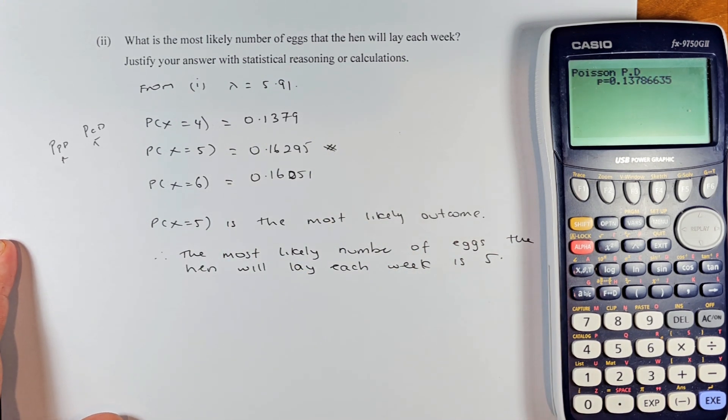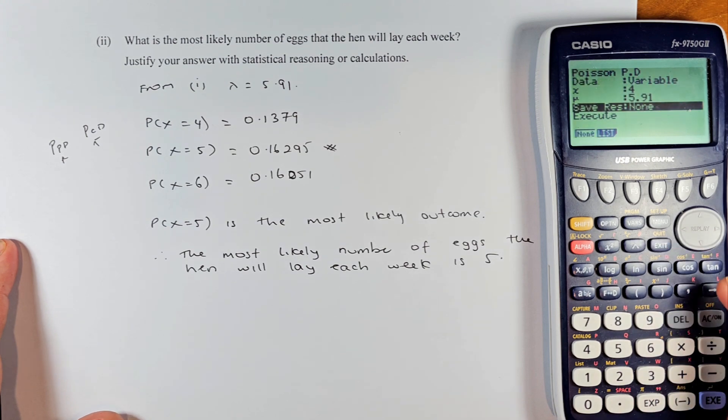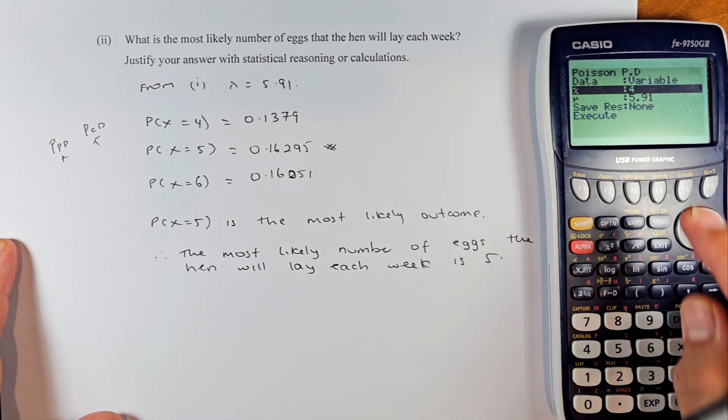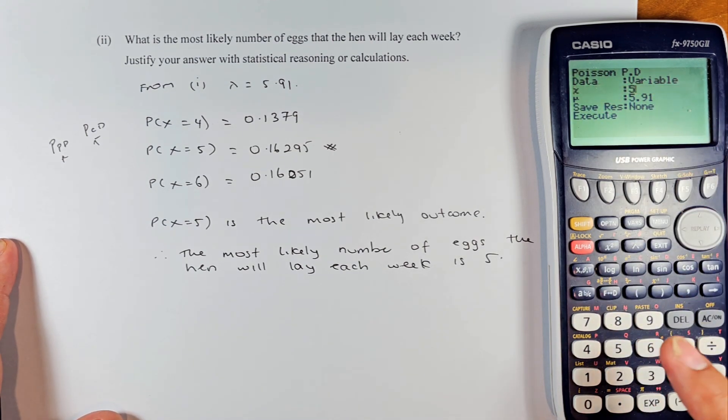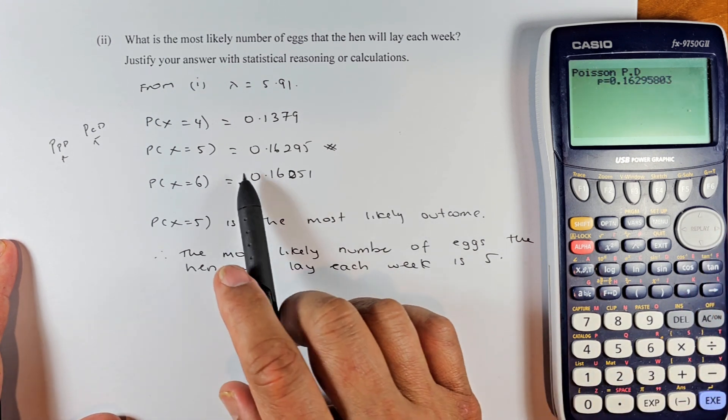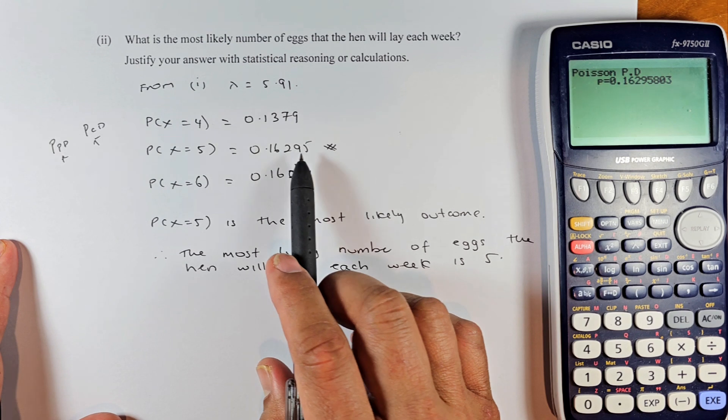Now we need to do the same for x equals 5. We're going to exit. This time we just change the x value to 5. The mean is still 5.91. Just press execute. The answer is 0.16295.